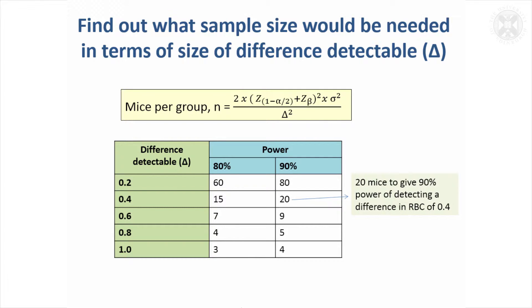It's quite useful to look at different scenarios, so look at different sizes of difference that might be detected. We just looked at 0.5, but you might want to think, well if the difference was 0.2 or if it was 1, how many mice per group would I need?